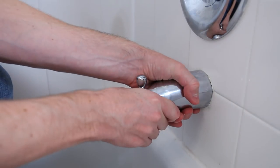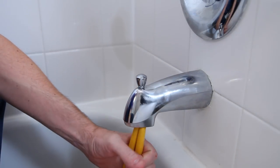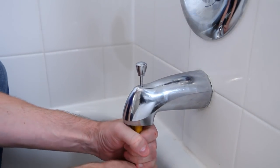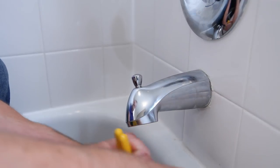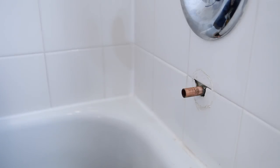But first things first, you've got to remove the current tub spout by twisting it counterclockwise. If it's been on there for a long time, you might want to put the wooden end of a hammer inside the tub spout and twist to loosen. Keep in mind that some tub spouts have a set screw that must be removed before the tub spout will come loose.